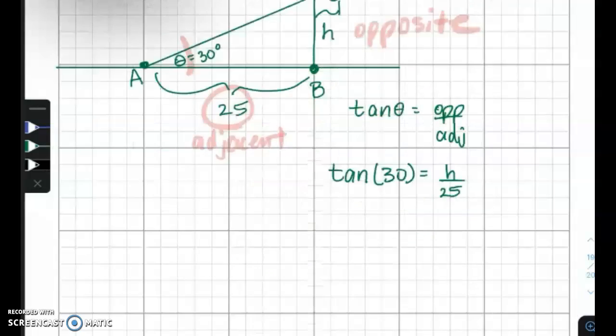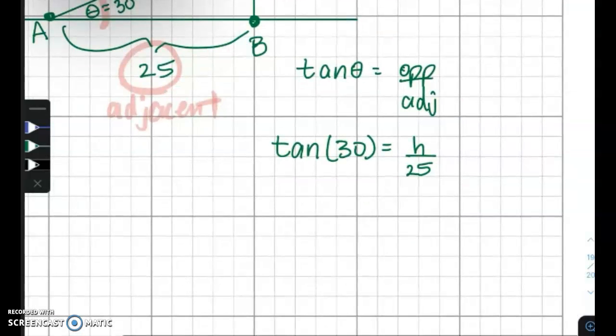So that's the equation I'm creating to solve the problem. And then to solve, I'm going to multiply 25 to the other side. Then you'll use your calculator or you can use your special triangles to find the tangent of 30.